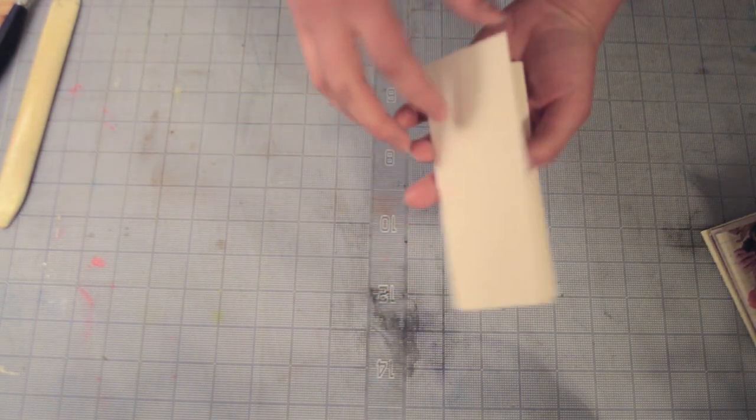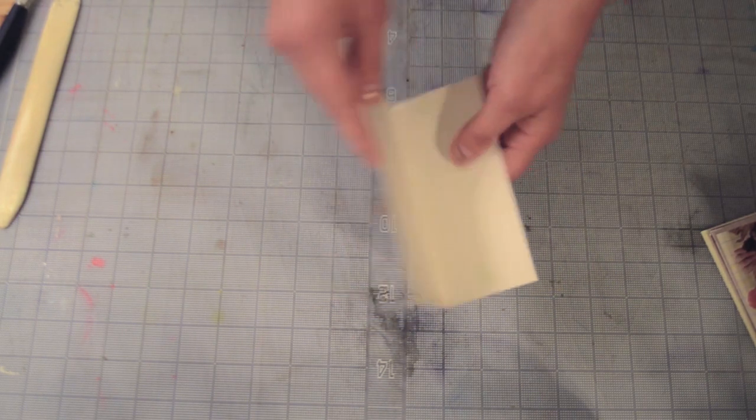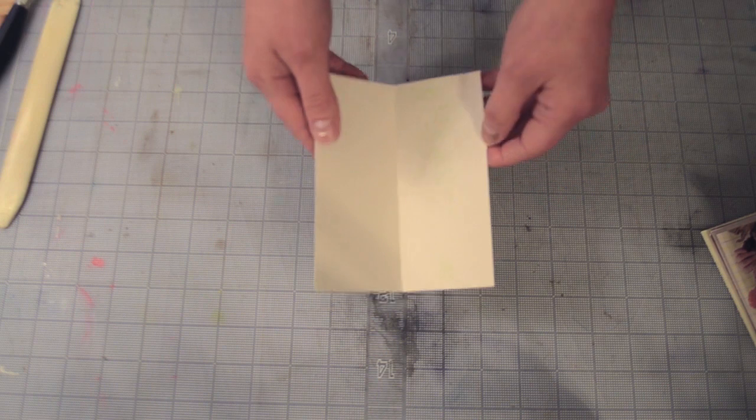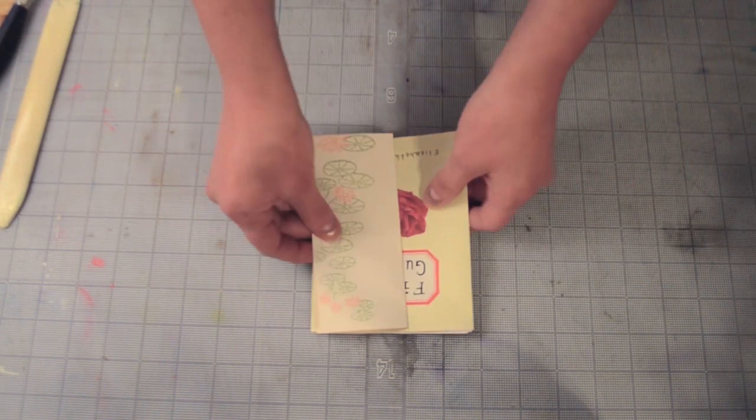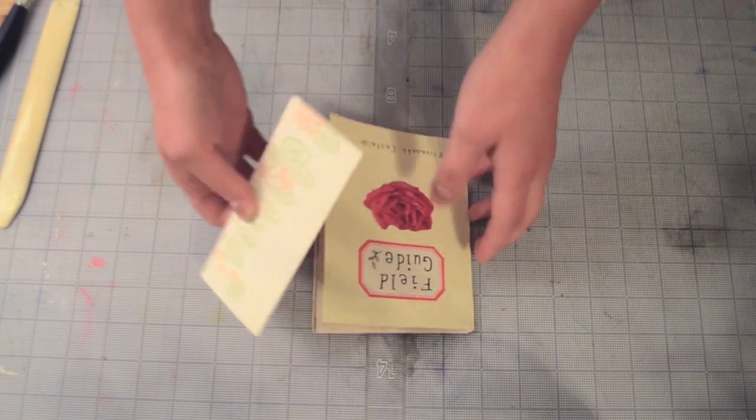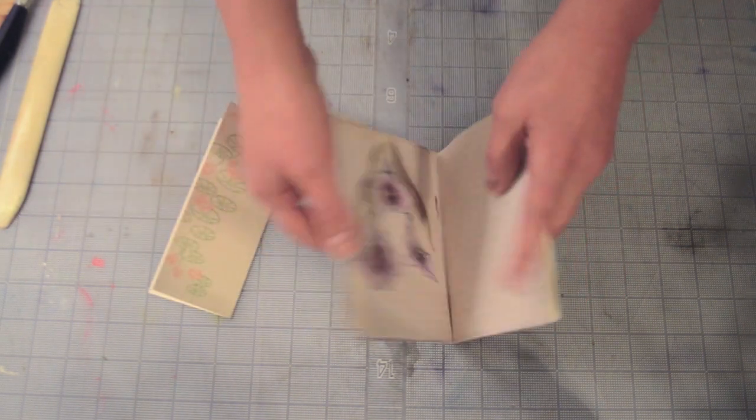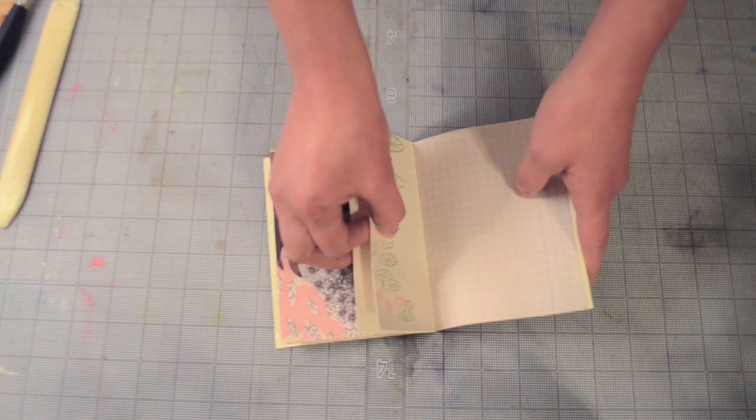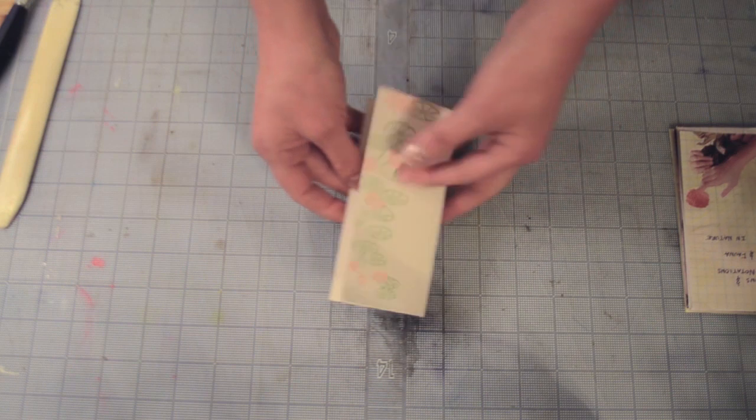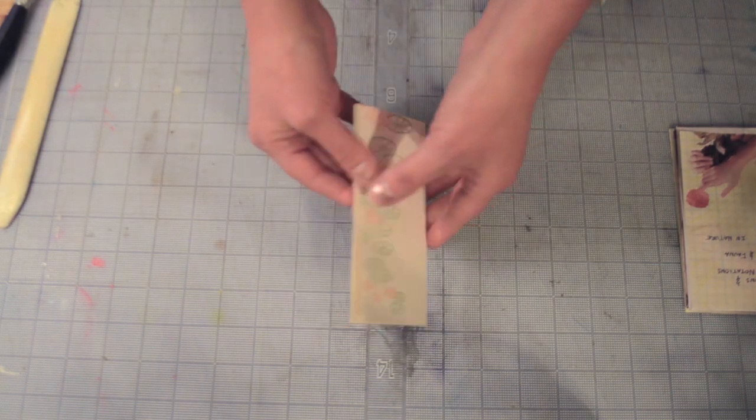So I'm using a scrap of cardstock. You can even just use a piece of computer paper, but the height of it is the same height as my book. So when it comes time to punch the holes, it'll fit right in the spine of the book. So first, fold your scrap paper in half.